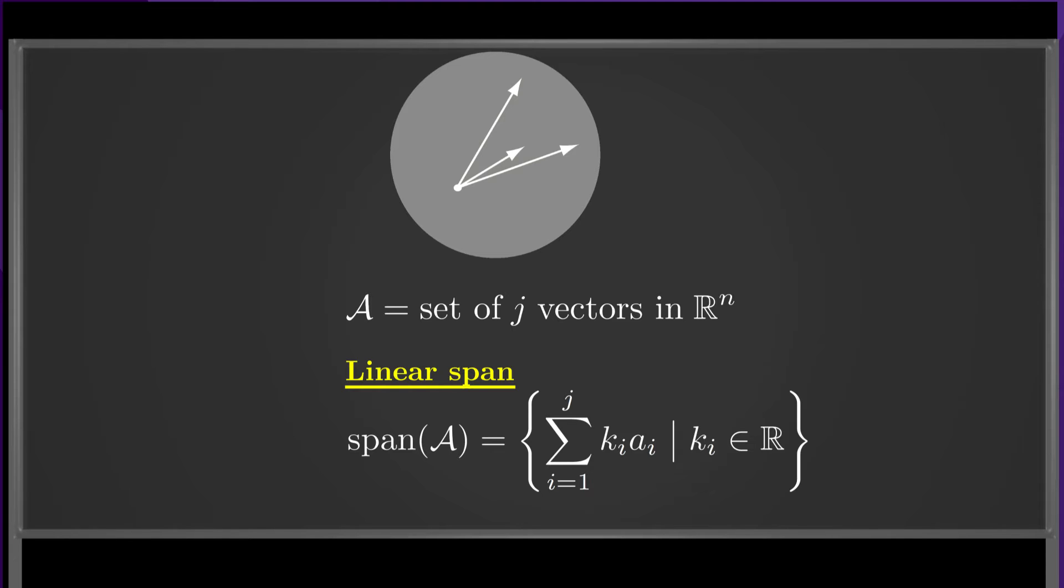Then the linear span of A is the set of all linear combinations of these vectors. For the three vectors shown here, the linear span is the entire two-dimensional space. Any point in the plane can be obtained by a linear combination of these vectors. In fact, any point can be represented as a linear combination of any two of these vectors.